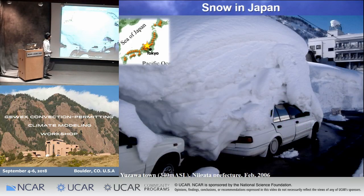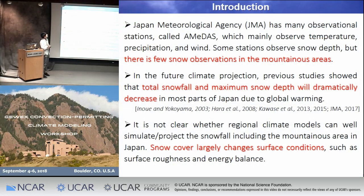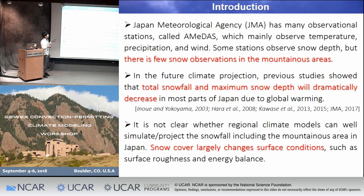Look at this picture, taken in this area — heavy snow broke a car. So if you have a chance to stay here, be careful where you park. Japan Meteorological Agency has many observational stations called Amidas, which mainly observe temperature, wind, and precipitation. Some stations observe snow depths, but mostly in the plain area; there are few snow observations in mountainous areas.